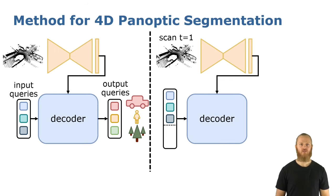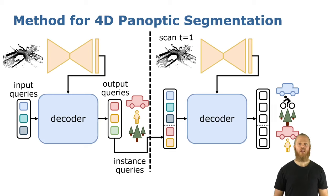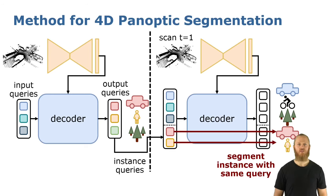For the next scans, we are now tracking instances that we segmented before. So we use the same set of learnable queries, but we also concatenate the queries that segmented instances in the previous scan. For example, the red query that segmented the red car and the yellow for the pedestrian. When segmenting the new scan, this allows us to perform tracking because the same query always segments the same instance.